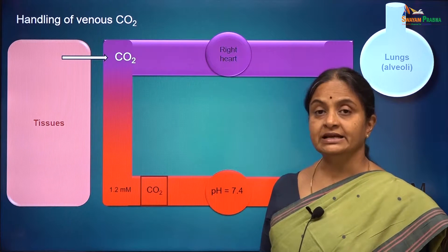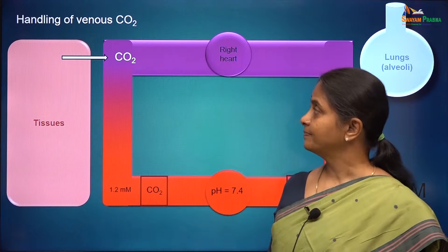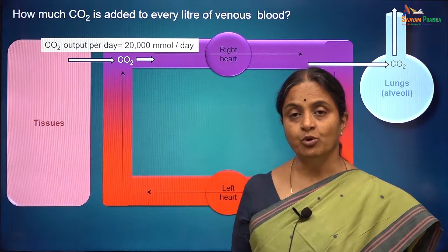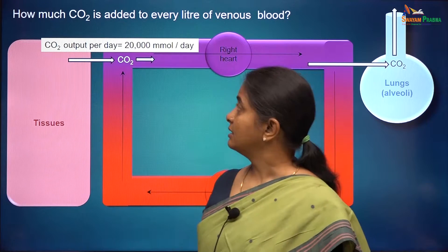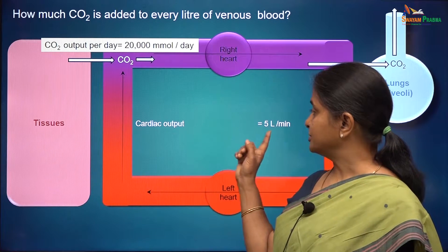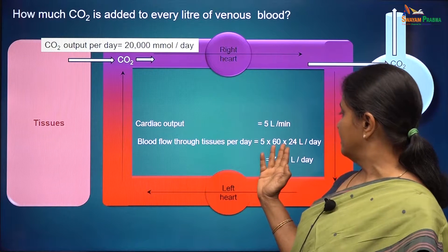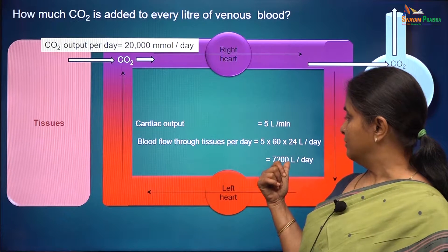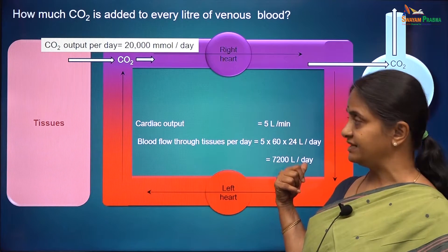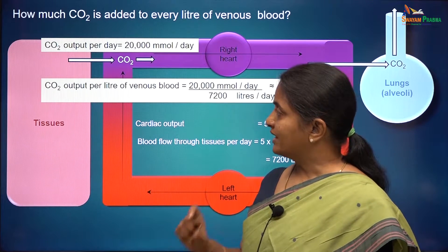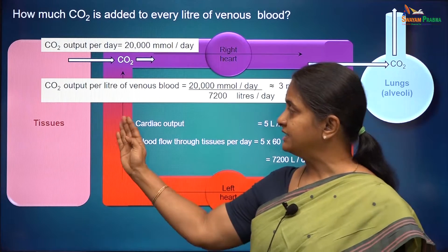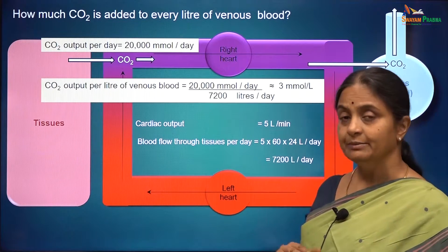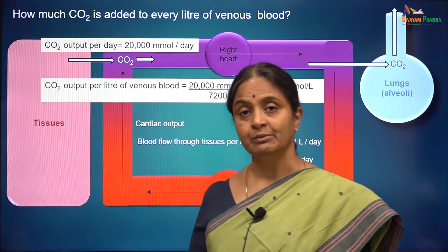How much carbon dioxide is added to venous blood? Carbon dioxide output per day is about 20 moles or 20,000 millimoles per day. The cardiac output is 5 litres per minute and in a day the blood flow through tissues is 7,200 litres per day. We can then work out the carbon dioxide output per litre of venous blood as that value divided by the blood flow per day, giving us about 3 millimoles per litre.